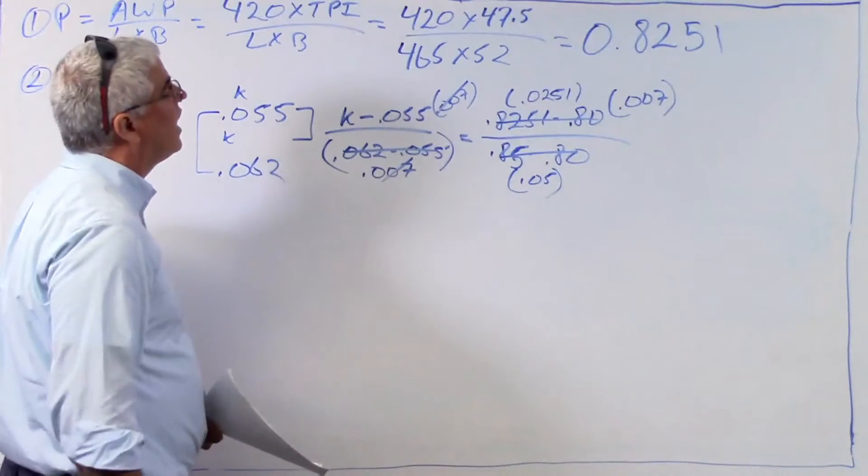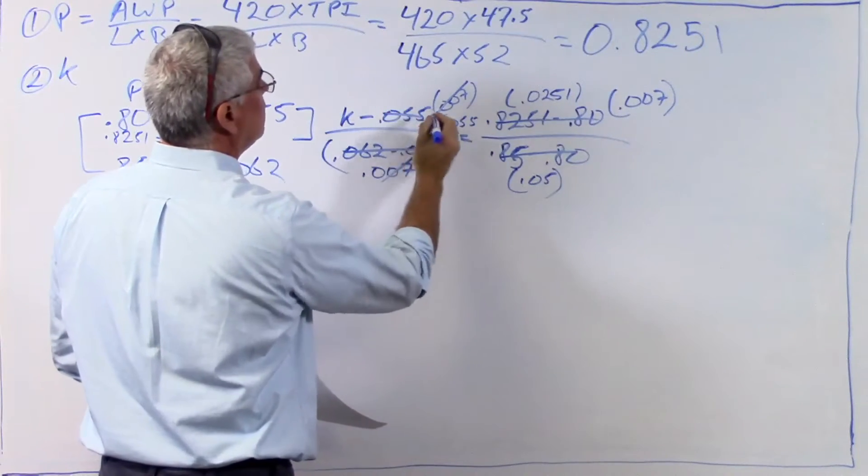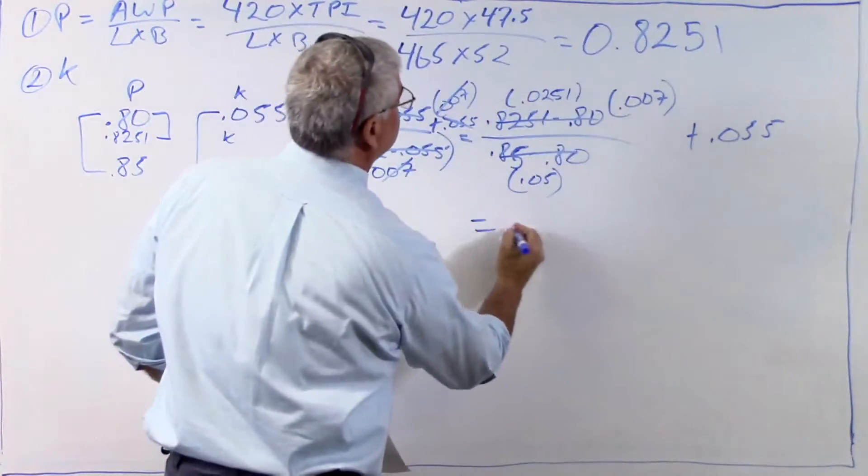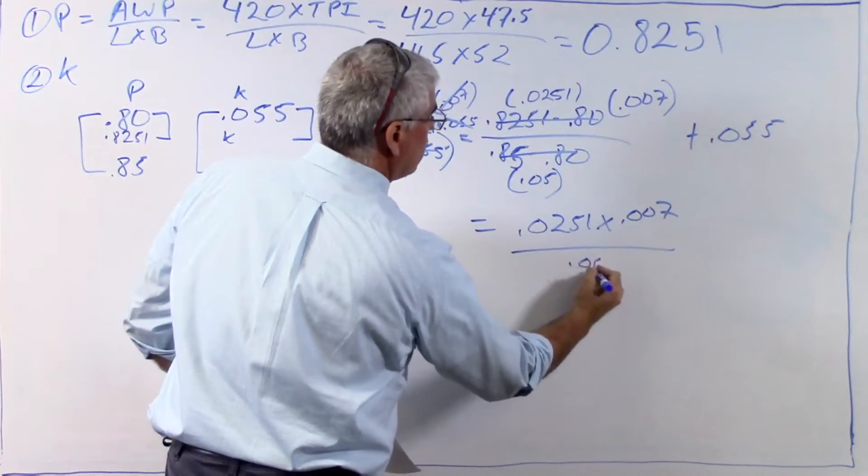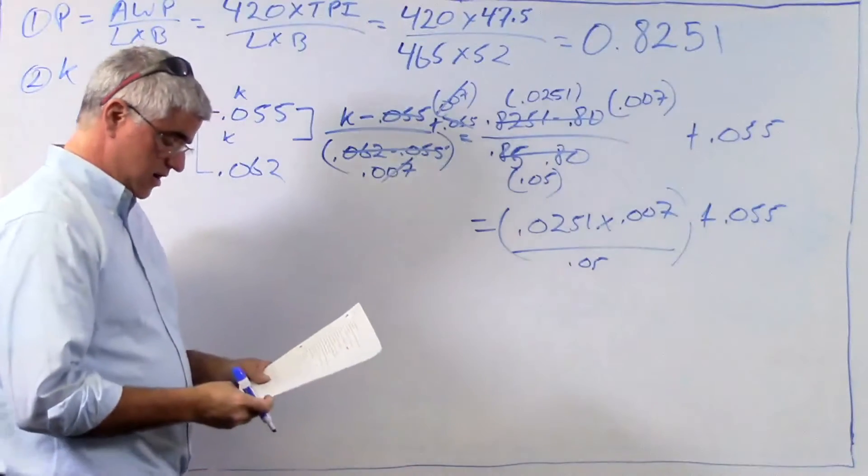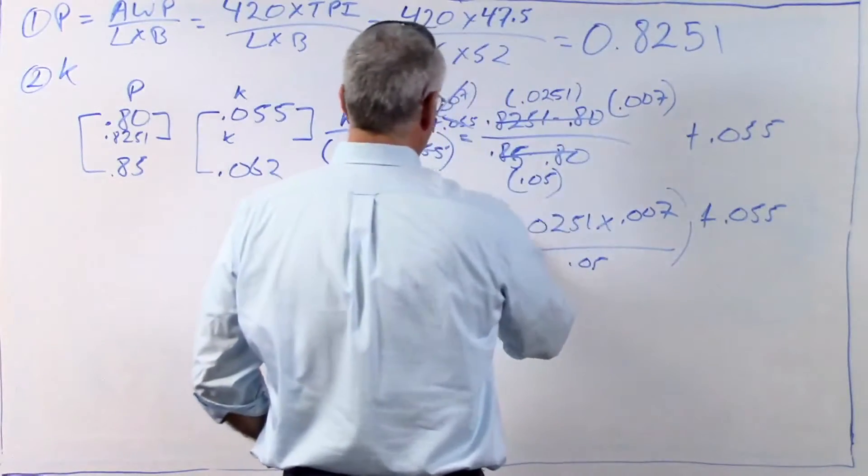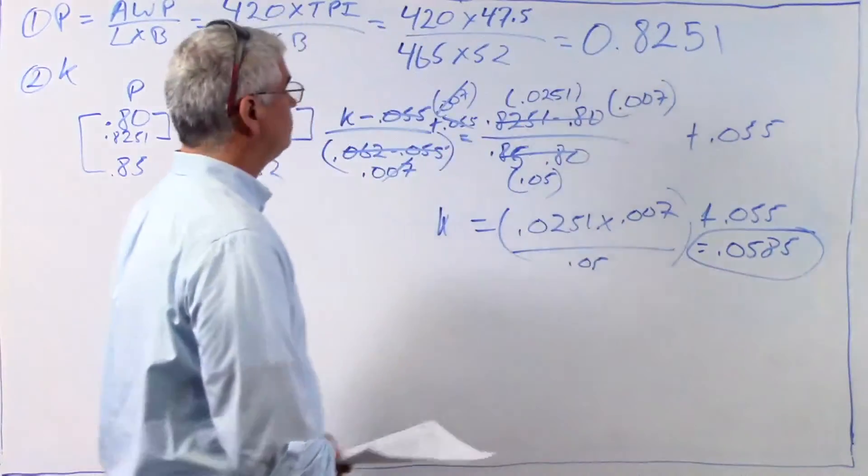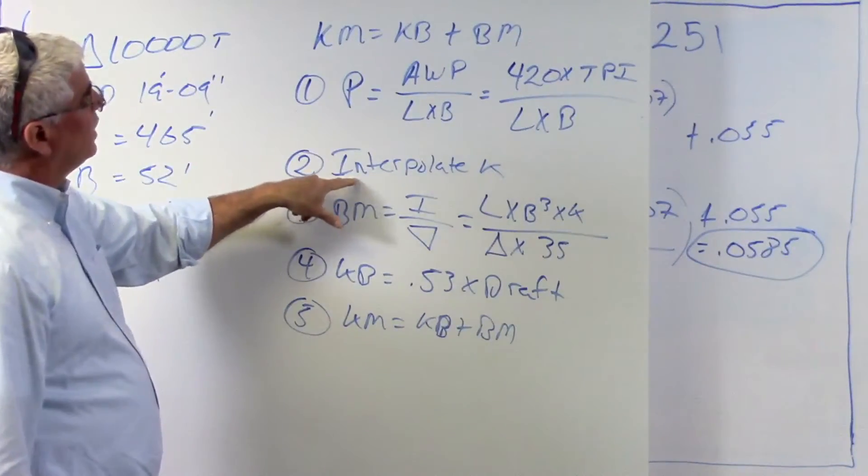Well, I've got to get rid of that 0.055. So what am I going to do there? Well, I'm going to add 0.055 to this side. So plus 0.055, those go away. I have to add 0.055 over here. And now I've got 0.0251 times 0.007 divided by 0.055 plus 0.055, and that is going to be my value of k. Turns out when I do all that, I get a value of 0.0585. So k equals 0.0585. Great. So I calculated p. I used p to interpolate k. Now I'm on to bm.